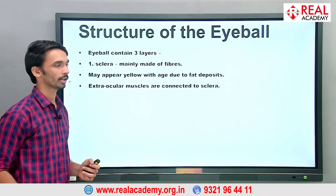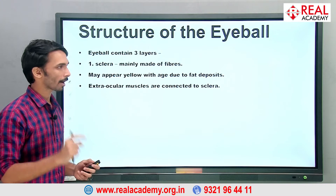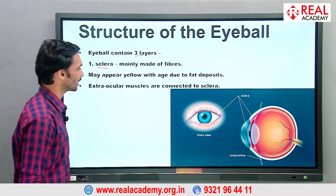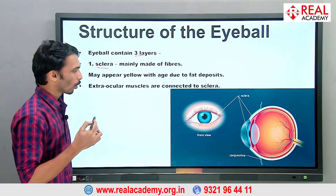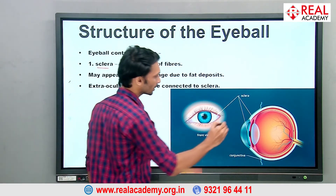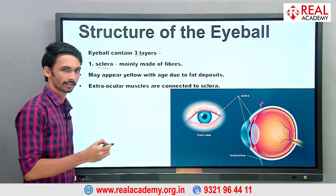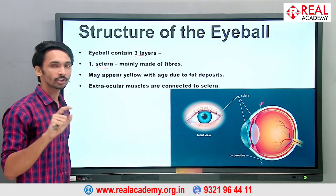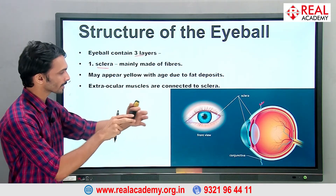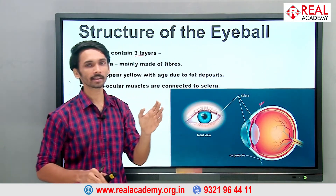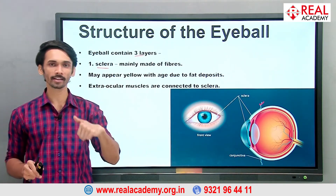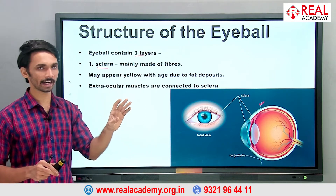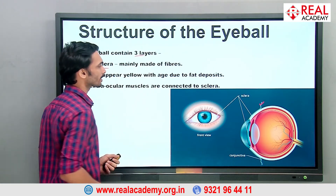The eyeball contains three layers. The first layer is the sclera — the white-colored layer. You can see muscles attached to the sclera called extraocular muscles. Extra means outside the eye; ocular means eyes. These muscles are connected to the brain from the back, and the brain uses them to move your eyes left, right, upward, and downward.